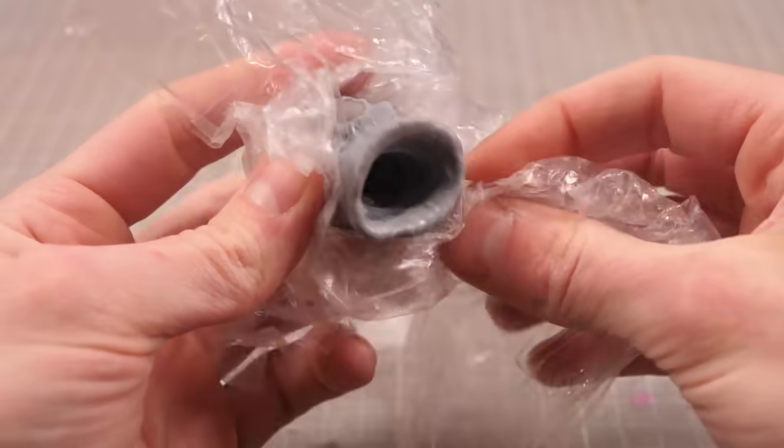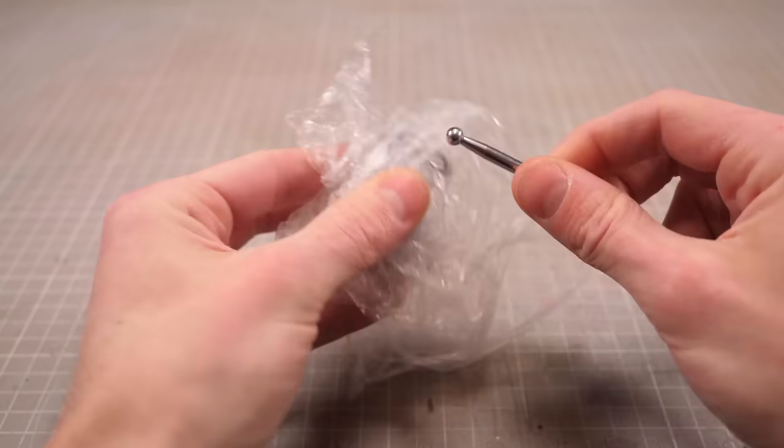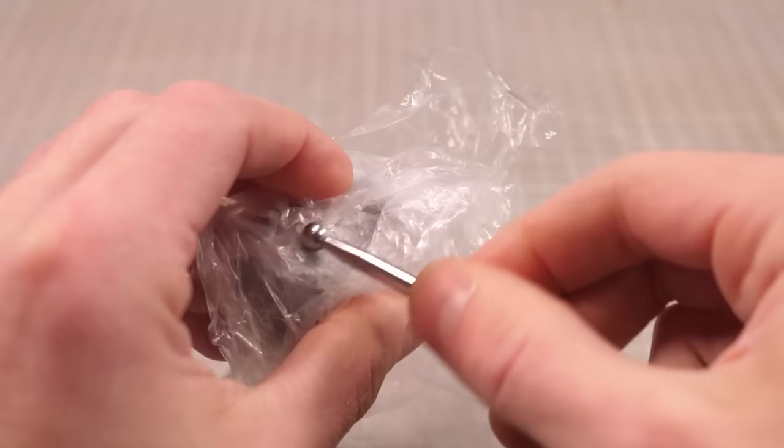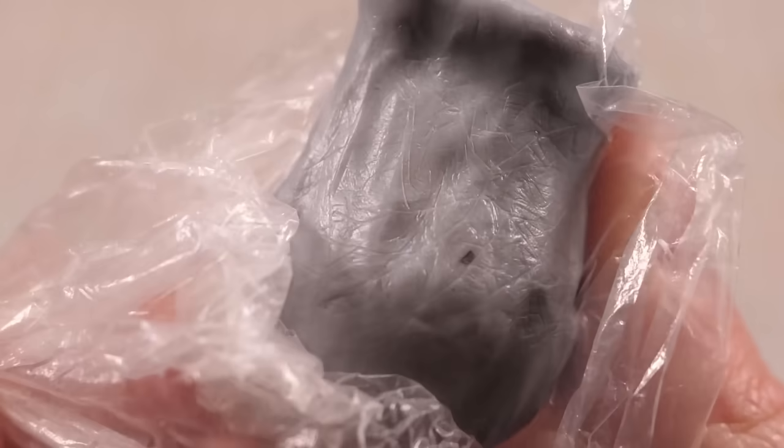Now to add some unsettling texture to its body I'm gonna wrap Weepinbell in a layer of scrunched up cling film then gently roll it onto the surface. This will both remove some of the fingerprints from holding it while also imparting some of the texture onto the surface leaving me with a pretty gross looking end result.